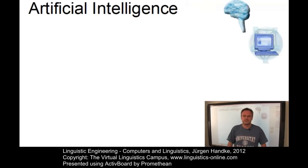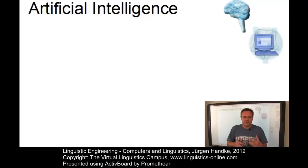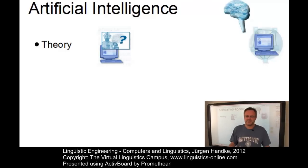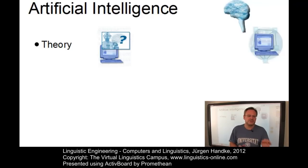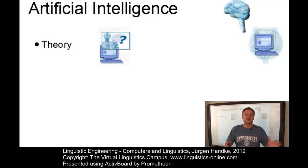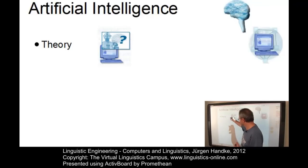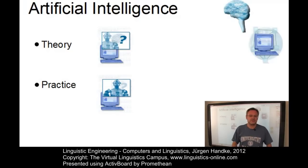Artificial intelligence, often abbreviated as AI, is the study and design of computer programs that behave intelligently. Artificial intelligence is more than an engineering discipline — it is also a subject of scientific investigation. Researchers construct theories about what AI applications should be capable of and test them mathematically and experimentally. Consequently, there are two approaches to artificial intelligence: artificial intelligence theory and artificial intelligence practice.